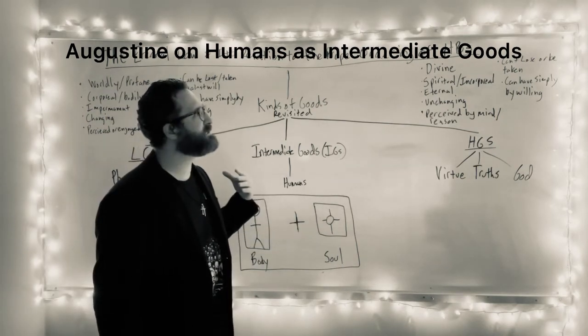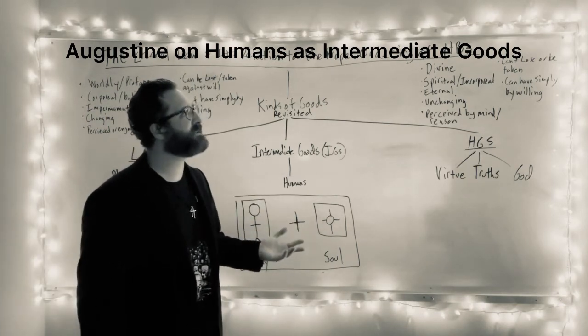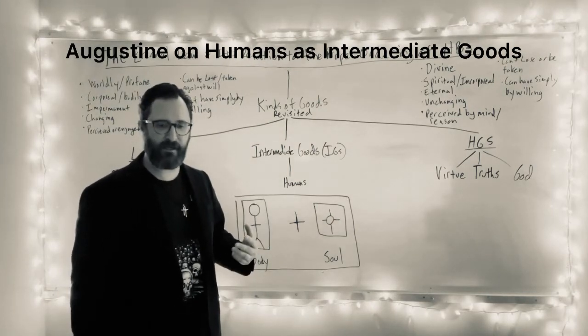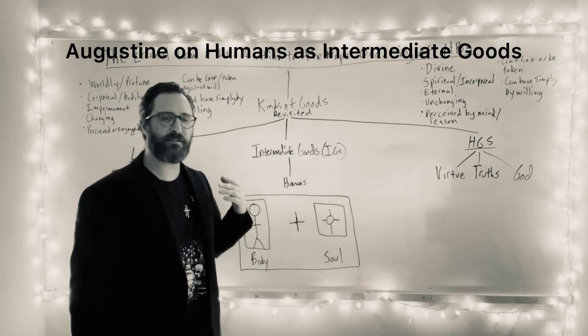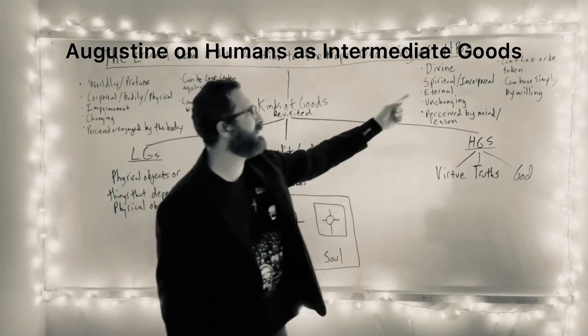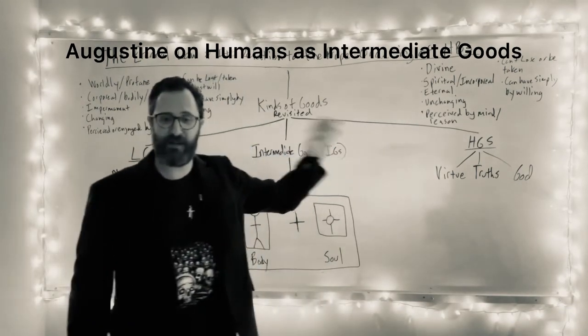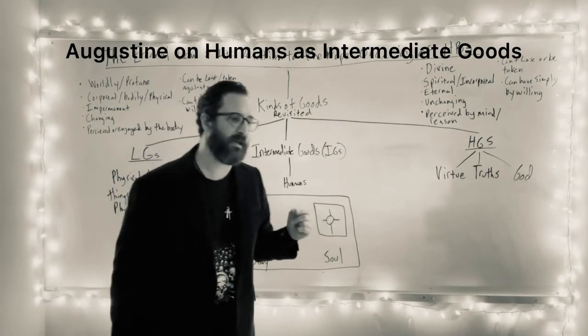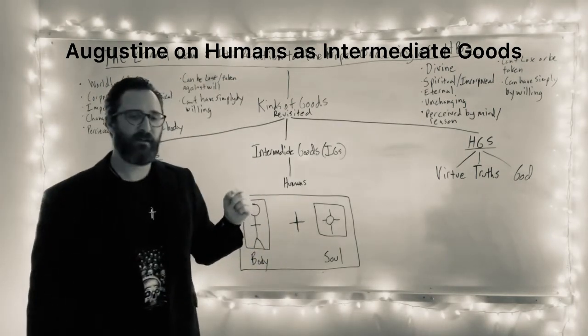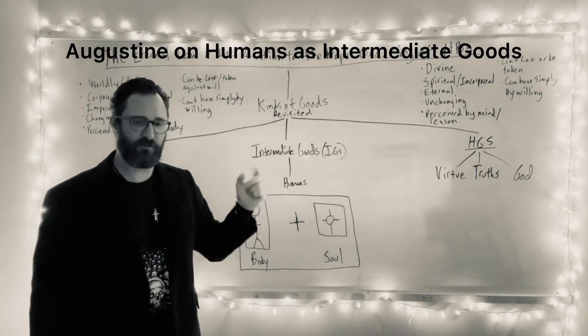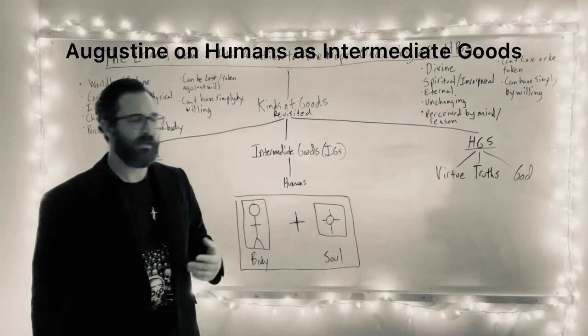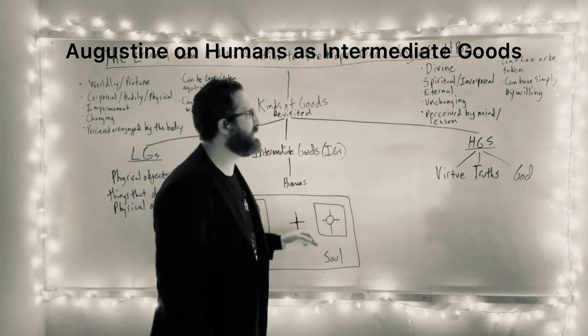There's a question as, so Augustine thinks that your soul is, can survive the death of the body. So, and there is a, God, of course, could take your soul from you, right? He could blink you out of existence, but he wouldn't think that another human being could destroy your soul. Just by destroying your body doesn't destroy your soul. Augustine takes the soul to survive the death of the body.